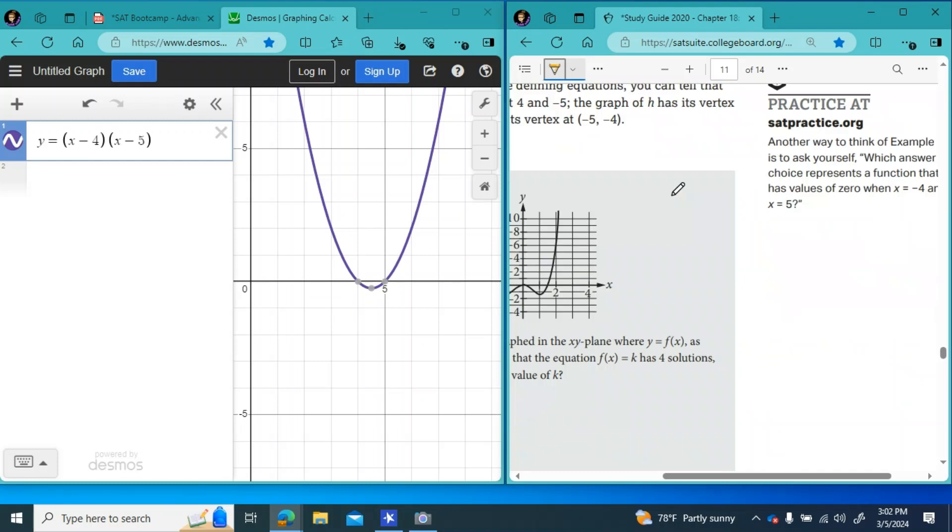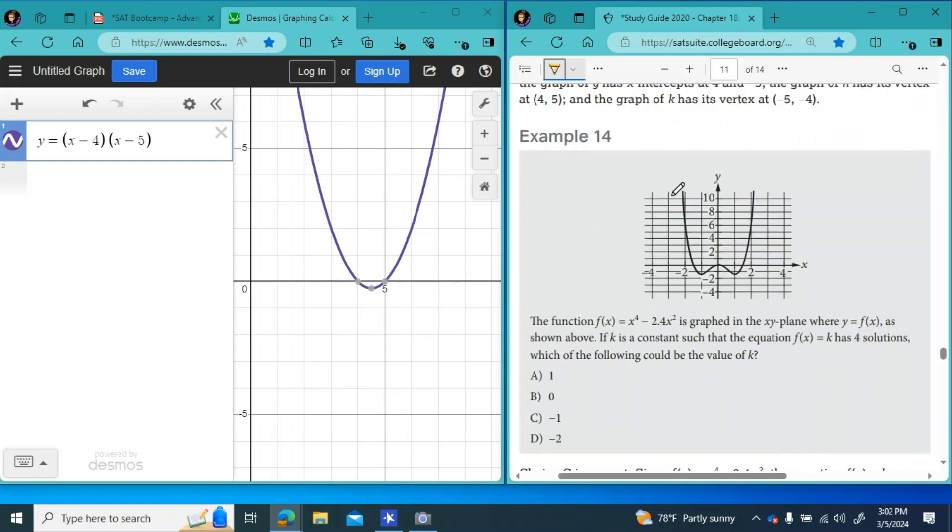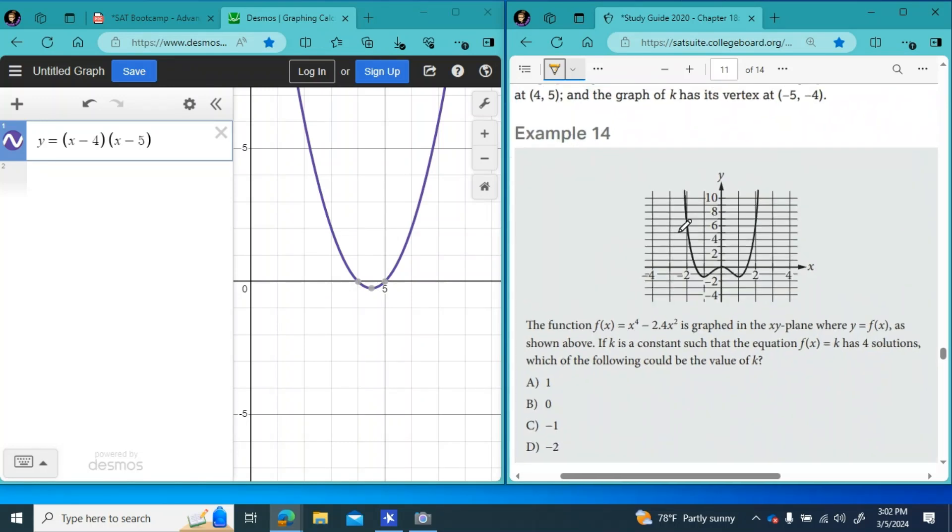The next question, number 14, says the function f of x equals x to the power of 4 minus 2.4 x squared is graphed in the xy plane where y equals f of x as shown above. If k is a constant such that the equation f of x equals k has four solutions, which of the following could be the value of k? So, right, f of x equals k. It even tells you here, y equals f of x. So y equals k.